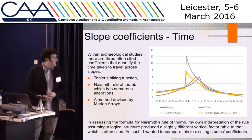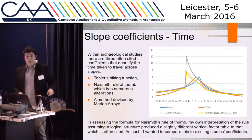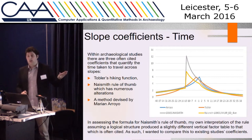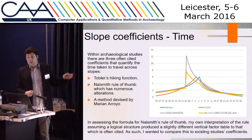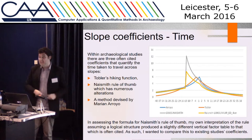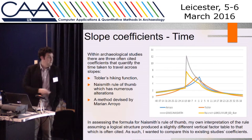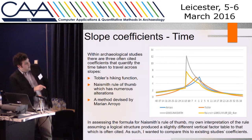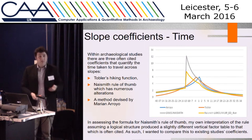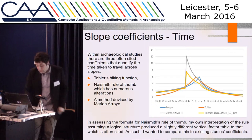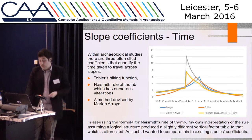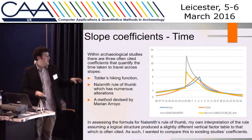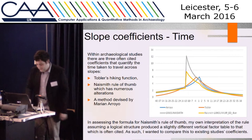The next step is to decide what coefficients to use to create friction — for example, how much friction does a five-degree slope represent? You could measure how long it takes to walk over that or how much energy it costs. There are several different coefficients for both. For time, I used the Total Hiking Formula, Naismith's Rule with the Langmuir correction, a method revised by Marian Arroyo-Bishop, and my own misinterpretation of Naismith's rule, which I won't go into too much detail about.